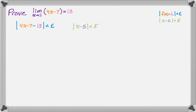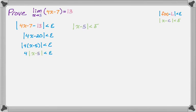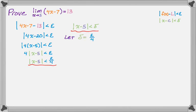Our goal is to make the absolute value of x minus 5 show up in the epsilon inequality. Doing a little bit of algebra — factoring 4 out — this should seem familiar because it's basically the same thing we just did. Factoring 4 out of the absolute value, the absolute value of x minus 5 is our target. Dividing by 4, if I let delta equal epsilon over 4, then for every epsilon greater than 0 I can find a delta, and I'm ready to write the proof.